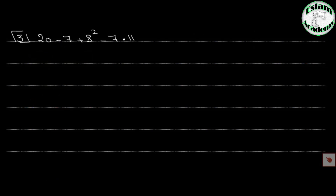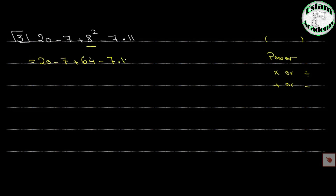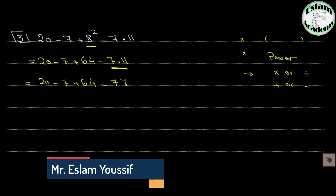Number 3: 20 minus 7 plus 8 to the power 2, minus 7 times 11. We start with brackets, then power, then times or divide, then plus or minus. There is no bracket but we have a power, so underline 8 to the power 2. We get 20 minus 7 plus 64 minus 7 times 11. Then we solve the multiplication 7 times 11, which equals 77.